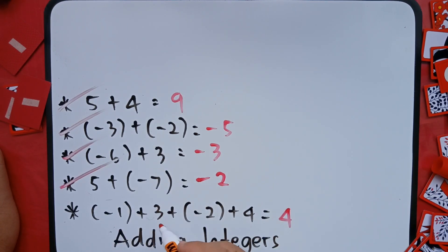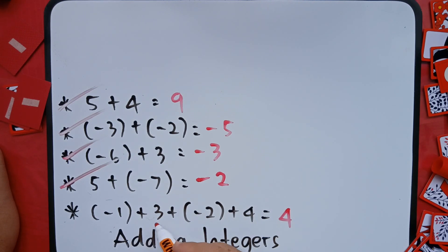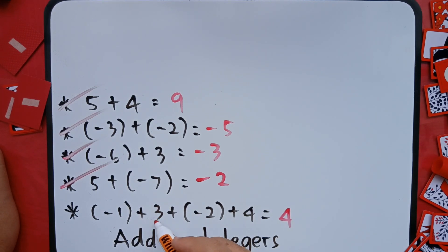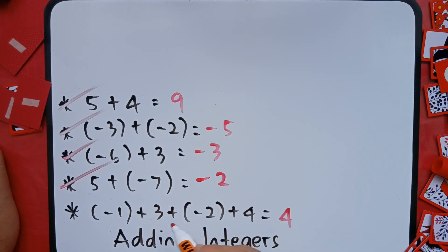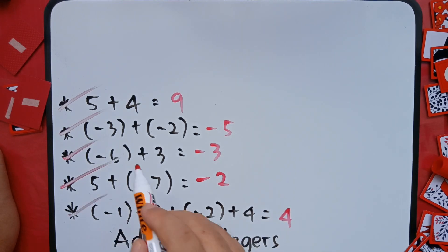Now: negative one plus three plus negative two plus four. Negative one and positive three have different signs — subtract: three minus one is two, copy the sign of the greater number — positive two. Then positive two plus negative two — different signs, subtract: two minus two is zero. What remains is positive four, so the answer is positive four. Check.